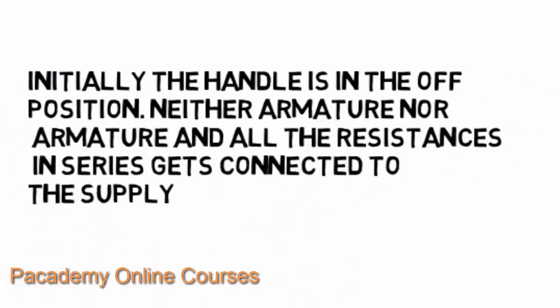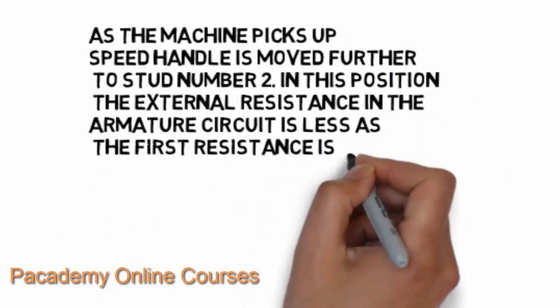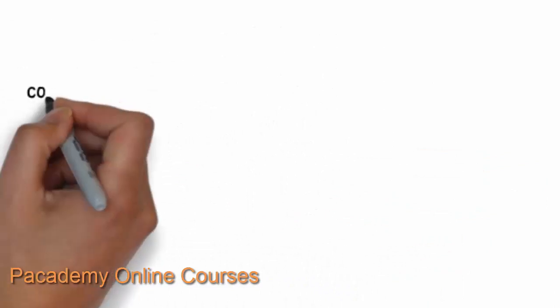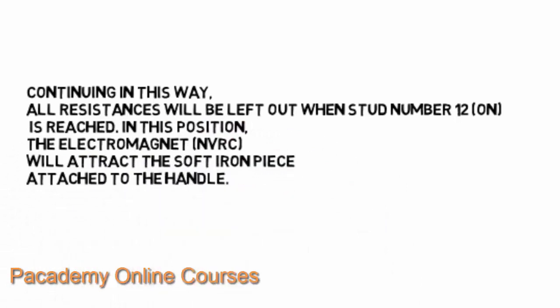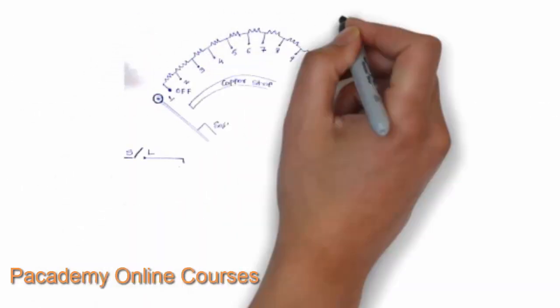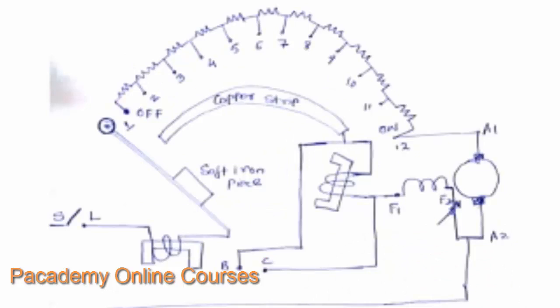Looking at the diagram of a three-point starter: initially the handle is in the off position, so neither the armature nor the resistance is connected to the supply. As the machine picks up speed, the handle is moved to position two, where the external resistance in the armature circuit is reduced. In this way, all the resistance is progressively cut off as the machine's speed increases. The electromagnet attracts the soft iron piece attached to the handle, keeping it in the final position with the field winding connected.